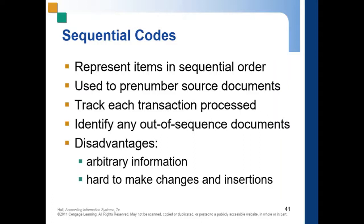Other examples of pre-numbered source documents include sales orders and purchase orders. You can commonly see this with invoice numbers and collection receipt numbers — those make use of sequential codes. Even digital receipts from POS systems like Jollibee use sequential sales invoice numbers.